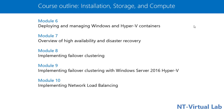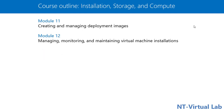Module 7 covers high availability and disaster recovery for Windows Server 2019, including implementing failover clustering and failover clustering with Hyper-V. Further modules cover implementing load balancing across servers, creating and managing deployment images, and monitoring and managing virtual machines. In total, Part 1 has 12 modules.